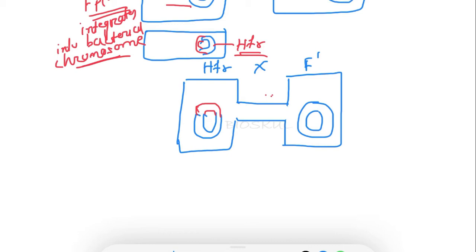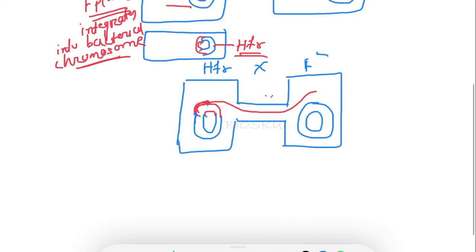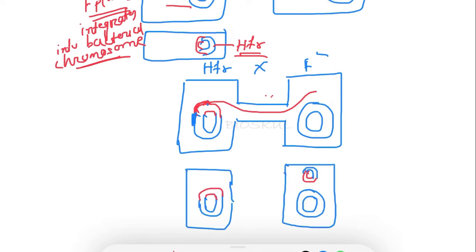In the next step, the genetic material moves from the donor to the recipient cell. The donor is the high frequency recombinant, and the F factor moves first to the F-minus. First there will be a nick on the F factor, and this F factor will start to move from the HFR strain to F-minus. Along with the F factor, some of the bacterial chromosome also moves into the F-minus.